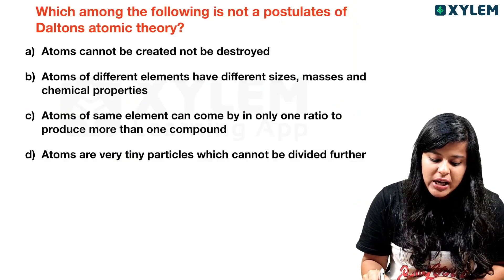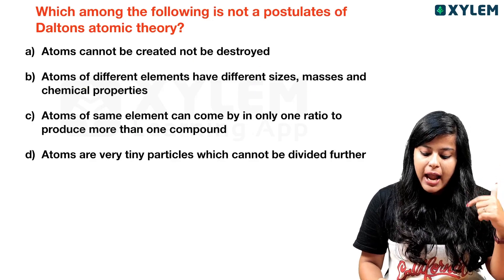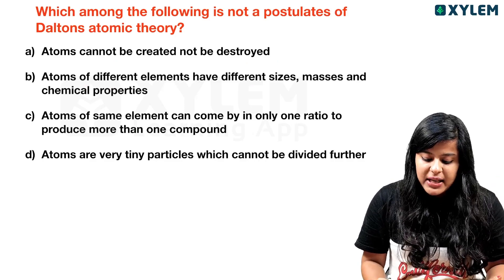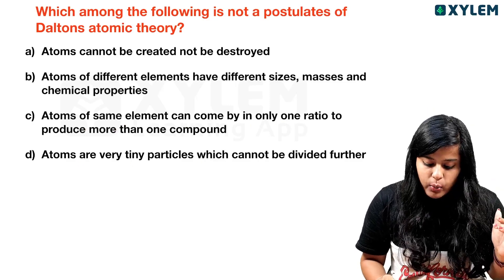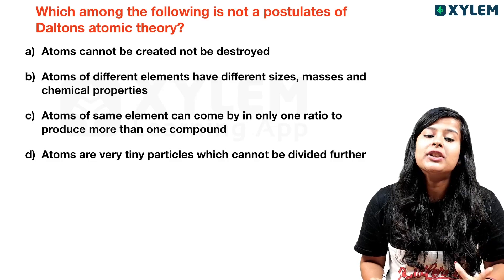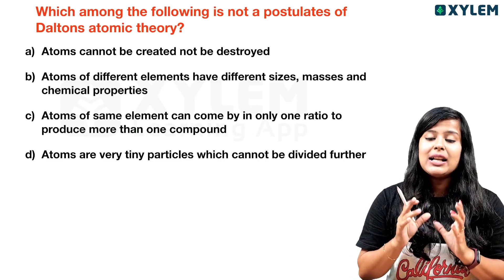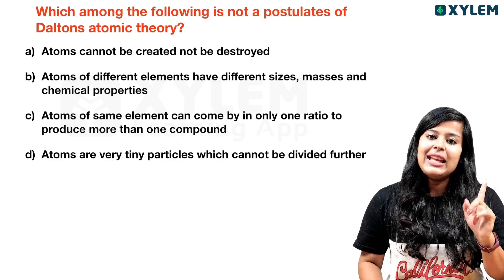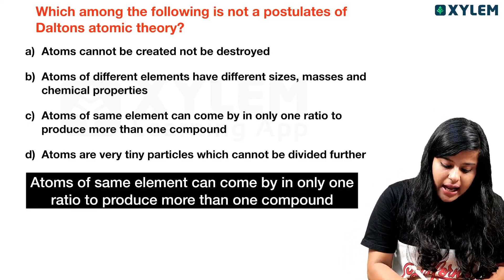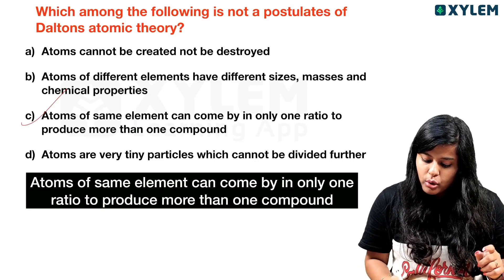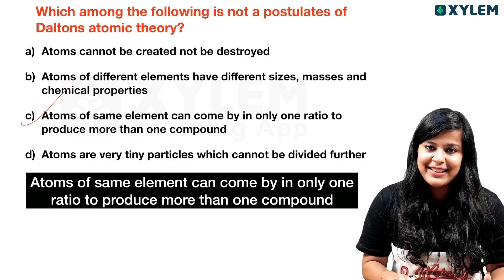The next question is: which among the following is NOT a postulate of Dalton's atomic theory? Options: atoms cannot be created or destroyed; atoms of different elements have different size, mass, and chemical properties; atoms of the same element can combine in only one ratio to produce more than one compound; and atoms are very tiny particles which cannot be divided further.